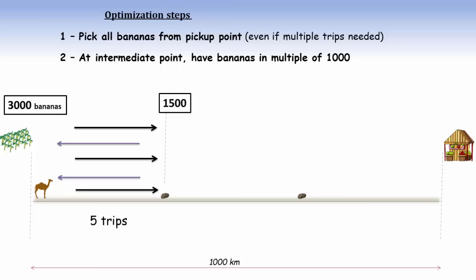But in the second trip, you won't be utilizing camel's full capacity of carrying 1000 bananas. And that will reduce the output number. That's why try to have bananas in multiple of 1000.